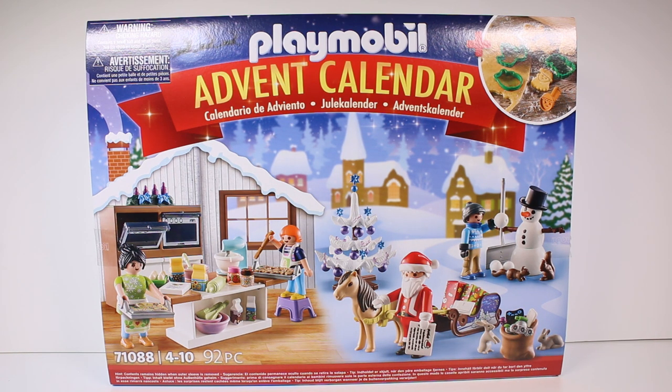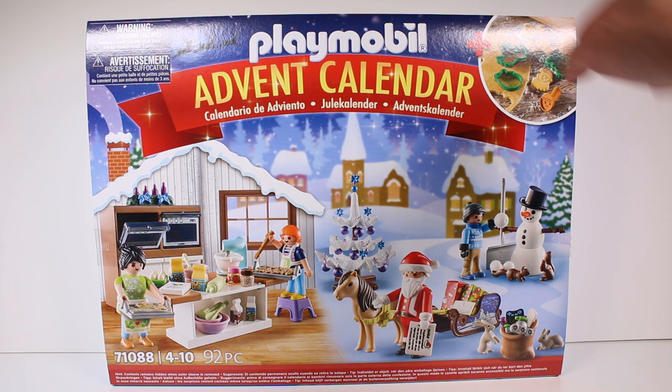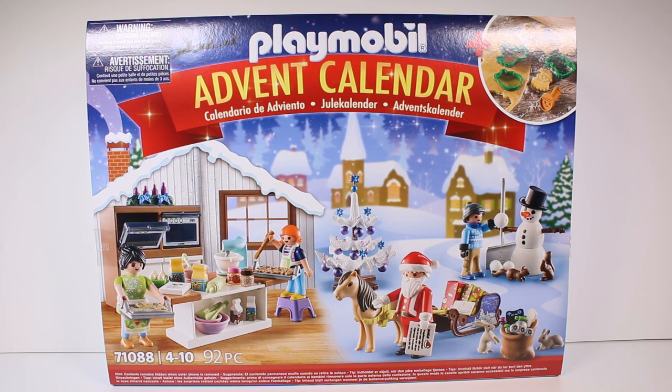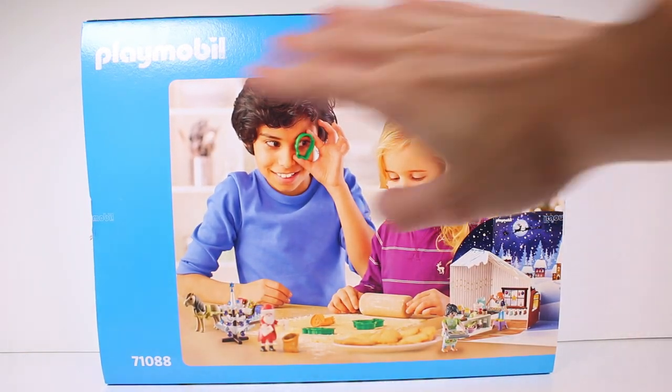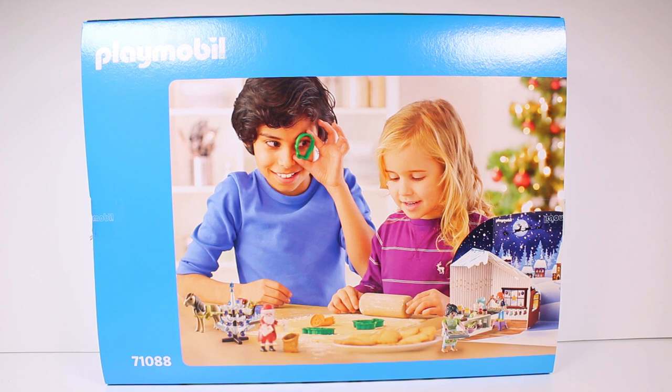There are 92 pieces in this calendar which is crazy. If we flip it, it might spoil it. Let me take a little peek. Actually it doesn't. Well, it kind of does a little bit. I'm sorry, but you know, not too badly. It doesn't have each individual piece listed. It does look like we're going to get some fun little cookie cutters that you can use this holiday season as well as all of these little accessories. So let's go ahead and start opening this calendar up.